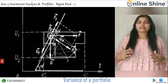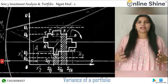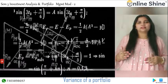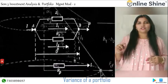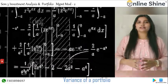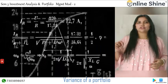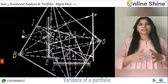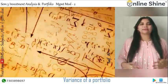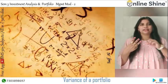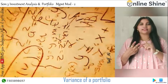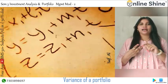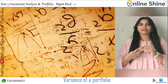Volatility is best measured using standard deviation, which is the square root of variance (σ = √σ²). Standard deviation of a portfolio refers to the volatility of the portfolio, and is calculated based on three important factors: the standard deviation of each of the assets present in the total portfolio, the respective weight of that individual asset in the total portfolio, and the correlation between each pair of assets of the portfolio.